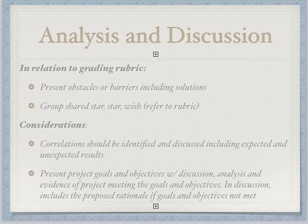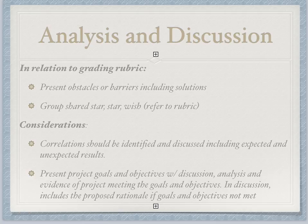Continuing on with the rubric: present obstacles or barriers, including solutions. This is so important because this is where a lot of the learning actually takes place — on how to improve the process for next time. Also, another part in the rubric is called the star-star-wish format. Refer to your rubric. A star is how your project proposal made a difference or an impact, and then the wish is what you would have done differently next time. This is very important in considering how you're refining your project and process for next time.